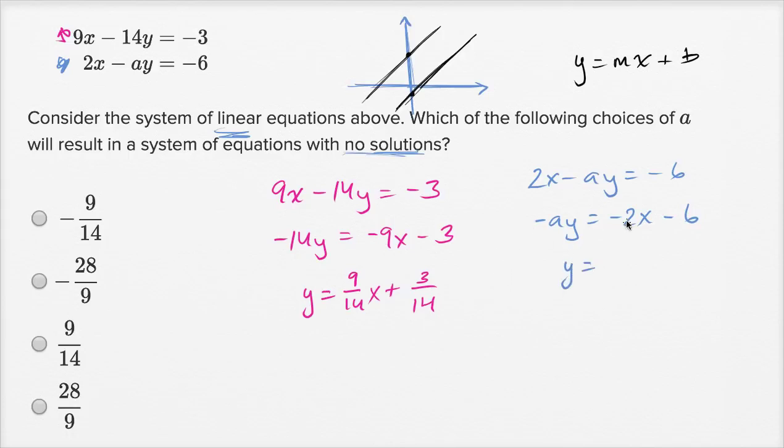And I get y is equal to negative 2 divided by negative a is positive 2 over ax. And then plus 6 over a.